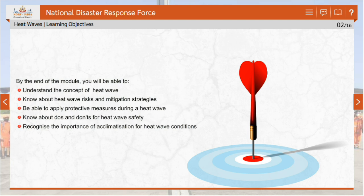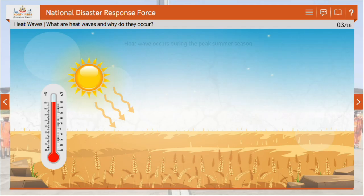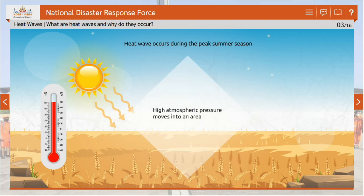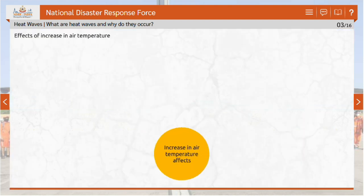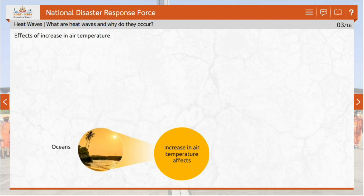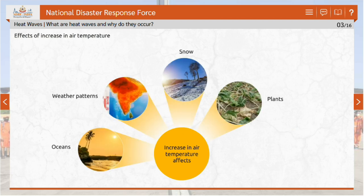Let us begin by understanding what is heat wave and why it occurs. Heat wave occurs during the peak summer season when a system of high atmospheric pressure moves into an area and lasts for two or more days. In such a high-pressure system, air from upper levels of the atmosphere is pulled towards the ground where it becomes compressed and increases the temperature. The increase in air temperature also affects the oceans, weather patterns, snow, plants and animals.